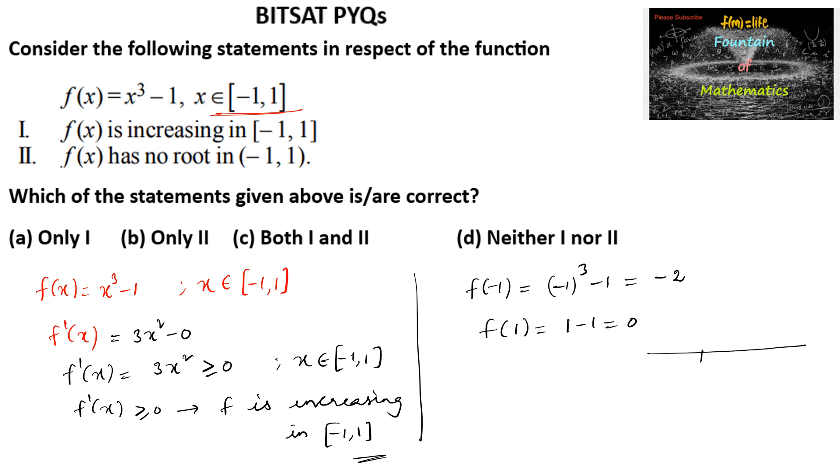We can see that the graph for negative 1 is minus 2 and for plus 1 it is 0. Since it is an increasing function, the graph will cut only at the point x is equal to 1, and clearly we can say that from minus 1 to plus 1 there are no roots.